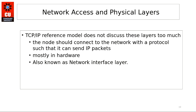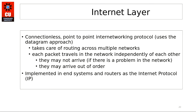Moving to some details about the TCP/IP layers: the Network Access layer is a practical model — the node connects to the network with a protocol so it can send IP packets, mostly in hardware, also known as the Network Interface layer. The Internet layer provides connectionless point-to-point internetworking and takes care of routing across multiple networks. Each packet travels independently and may arrive out of order.